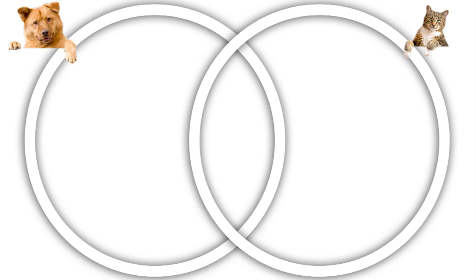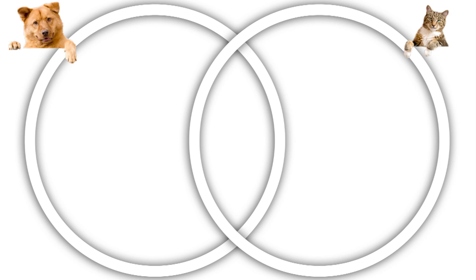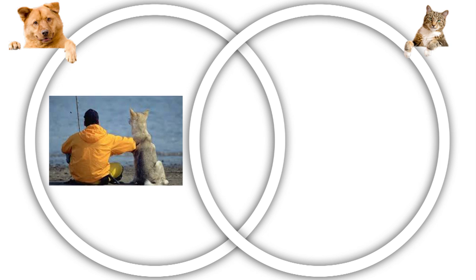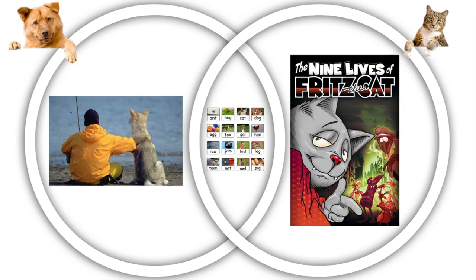At a lower level, your students' responses might be a lot more obvious. For example, they might say that dogs eat dog food and cats eat cat food, but they both have four legs. At a higher level, your students are going to give you much more abstract ideas. For example, they might say that dogs are man's best friend and cats have nine lives, whereas they both have three letters in their name.